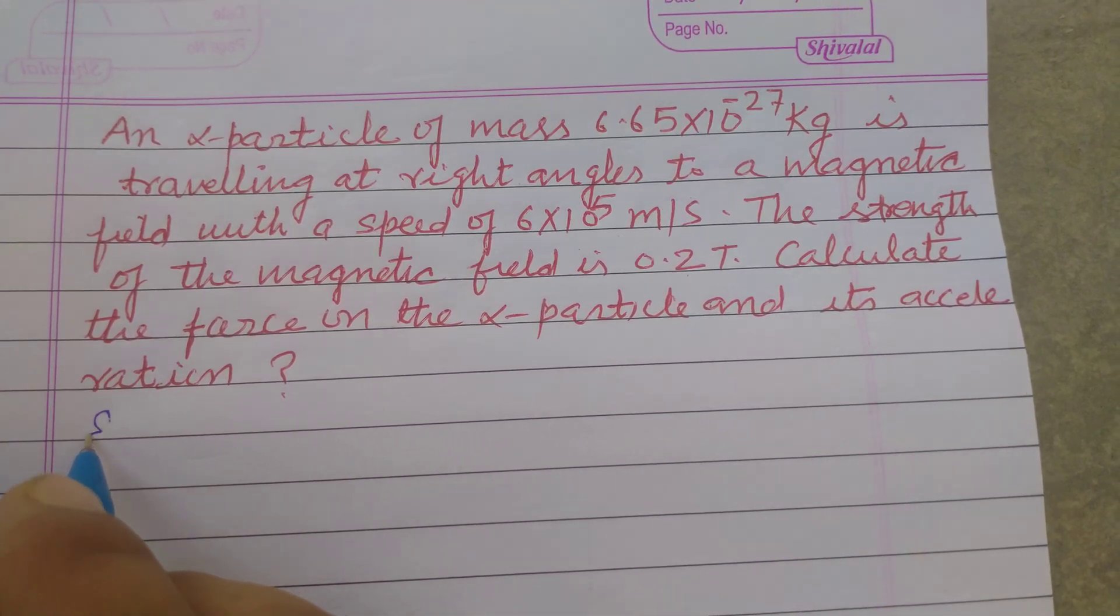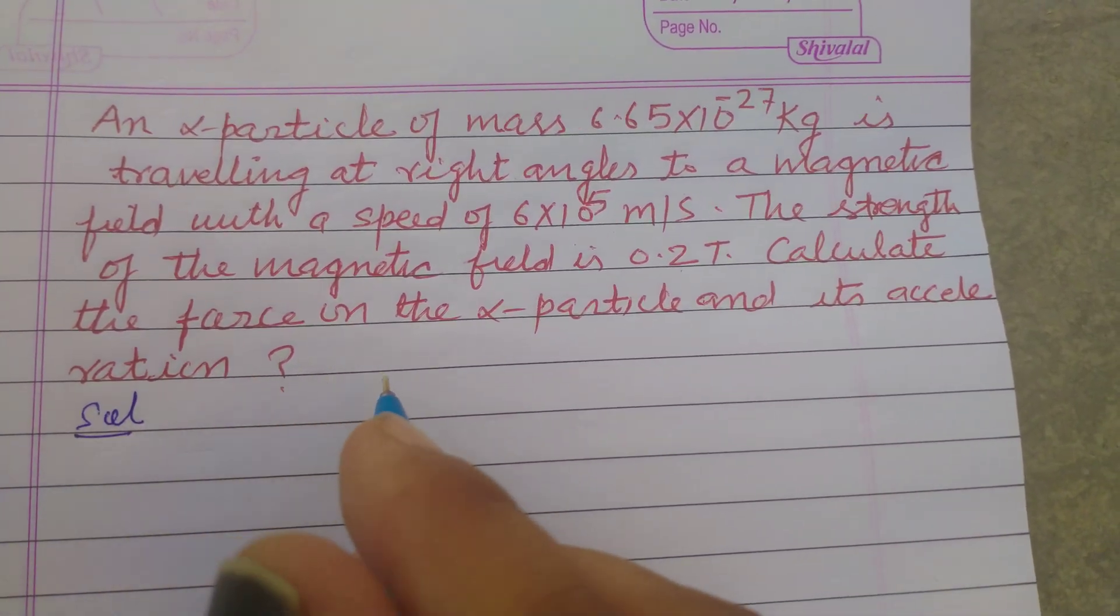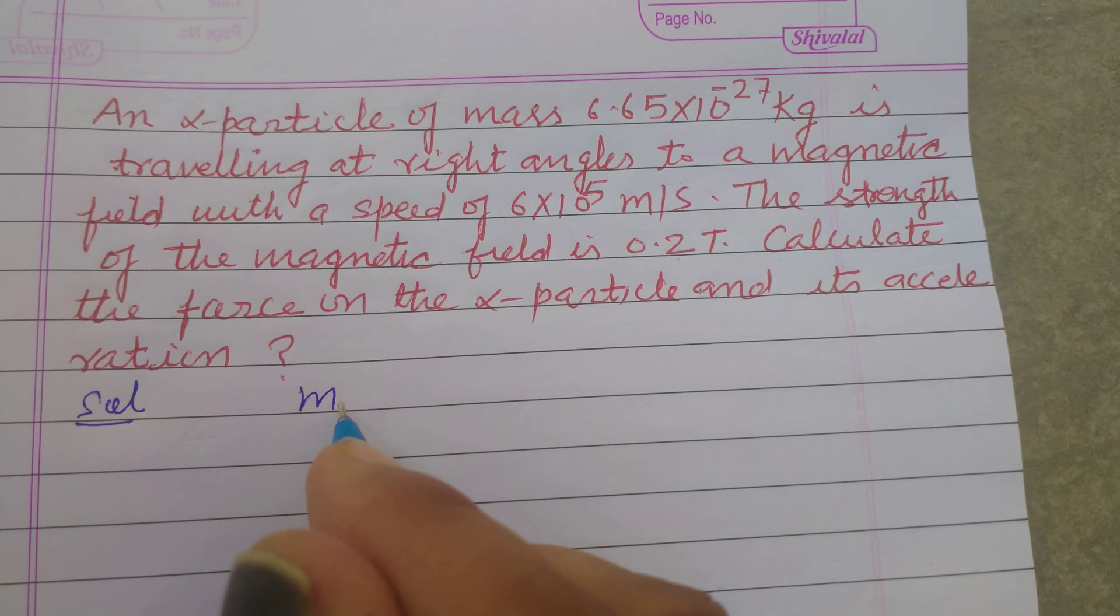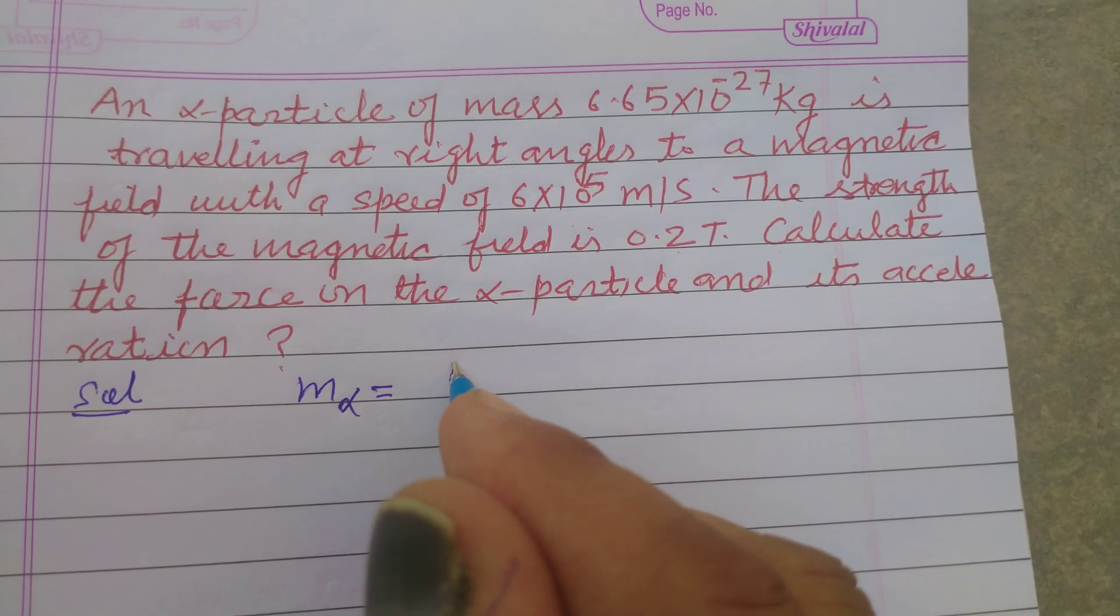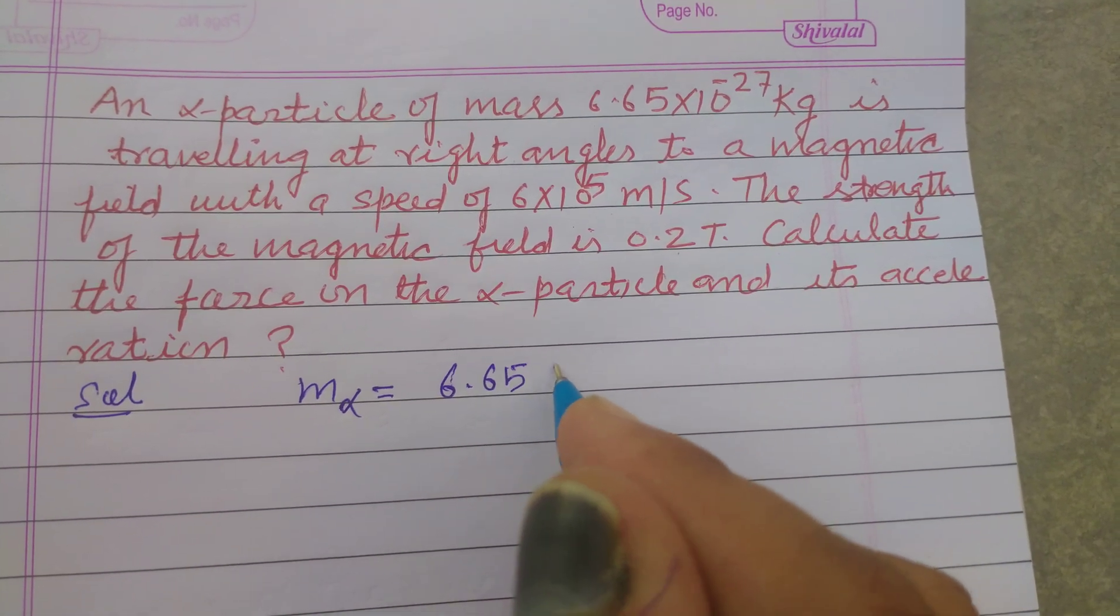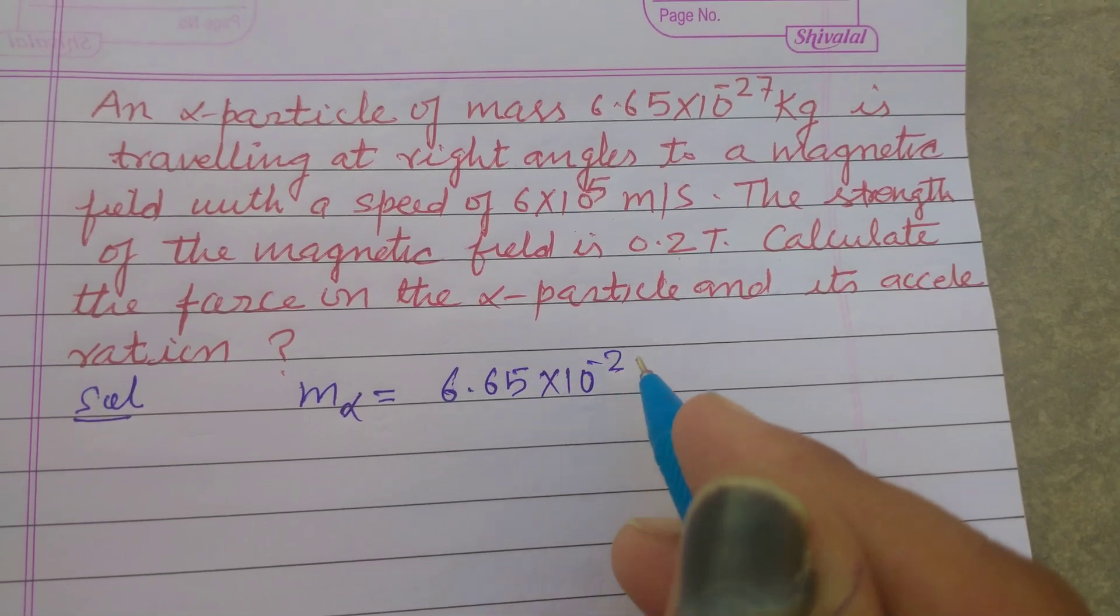So students, here we have the mass of the alpha particle, m_α, which is given to us as 6.65 × 10^-27 kilograms.